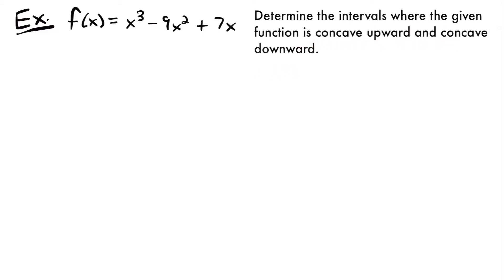The way we determine this is by finding the second derivative of our function and setting it equal to zero to find our potential inflection points, and then testing values on the intervals between those potential points to see whether our second derivative is positive or negative. So let's start by taking the first derivative of our function and then taking the derivative again to find our second derivative.